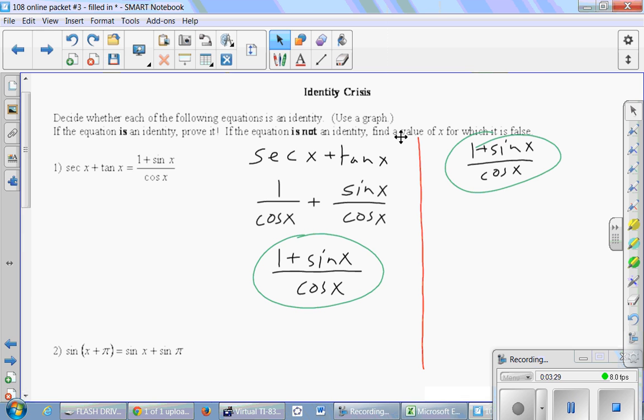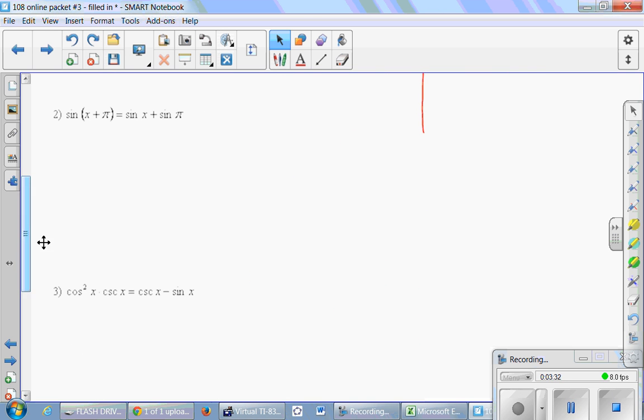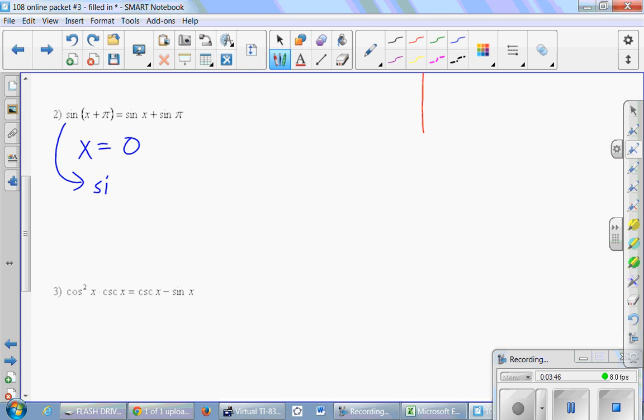The instructions here said if it's not an identity, find the value of x for which it's false. So all you've got to do is pick just about any number you want for x and make sure that the two sides are not equal. So one thing you could do, for example, is just say let x equal zero. And then that's easy enough to plug in. So this would say sine of zero plus pi equals, with a question mark, I'm hoping it doesn't, sine of zero plus sine of pi. Sine of zero plus pi, that's really sine of pi, which is zero, equals sine of zero is also zero, plus sine of pi is another zero. And in fact, this equation is true. This is unfortunate. It doesn't mean that it really is an identity. It just means that we got a little bit unlucky and we picked a value of x where those two curves actually intersected each other.